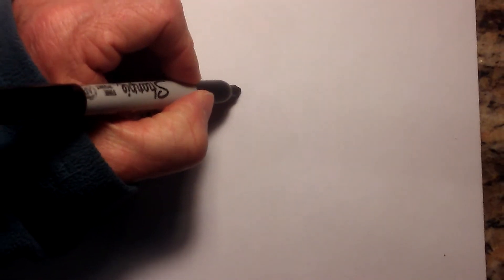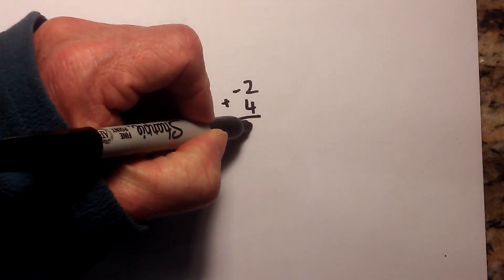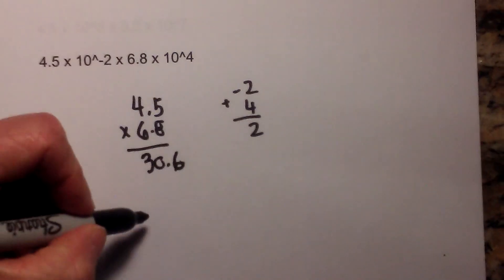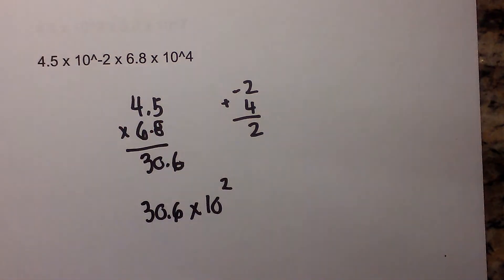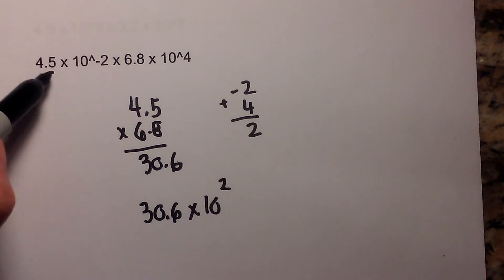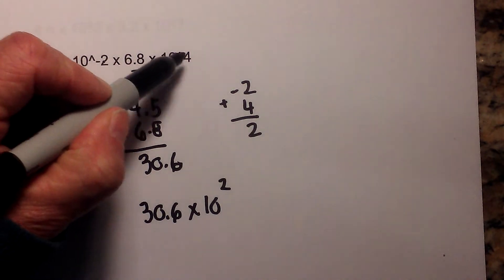Next, we need to add negative 2 plus 4, and that equals 2. So that will become 30.6 times 10 to the second. So what I've done is I've multiplied the two coefficients, which is right here, and I've added the two exponents.